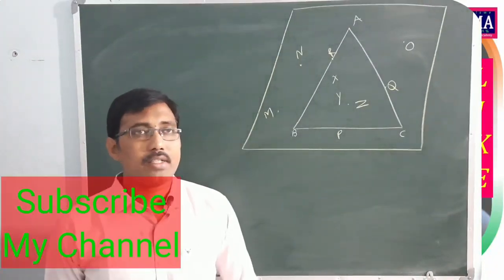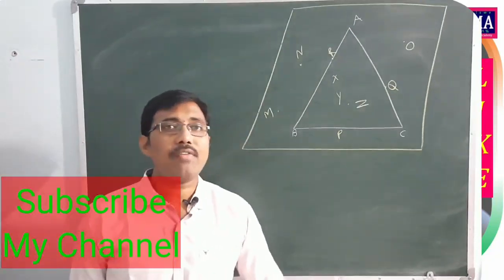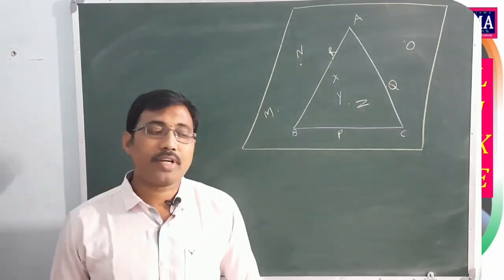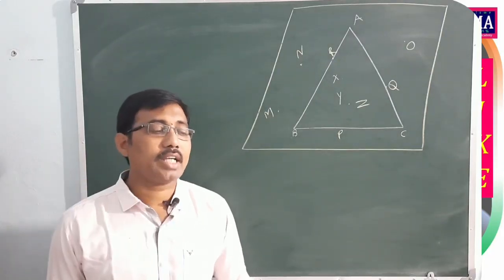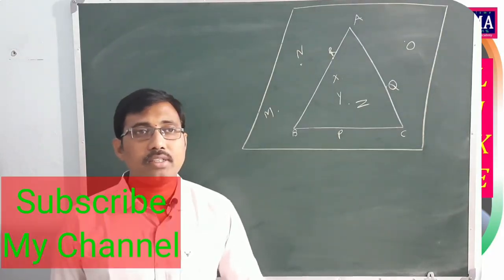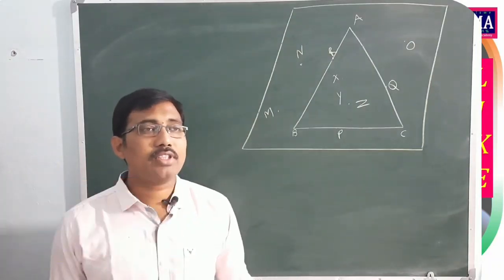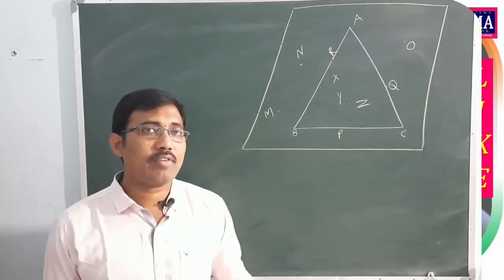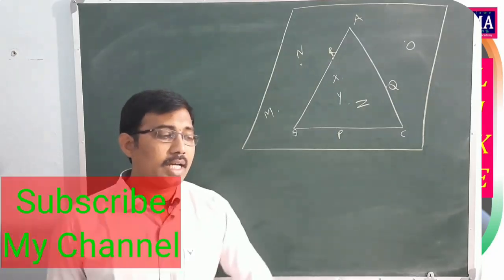Definition: the interior of a triangle together with its boundary is called the triangular region. The interior of the triangle, together with its boundary, is called the triangular region.